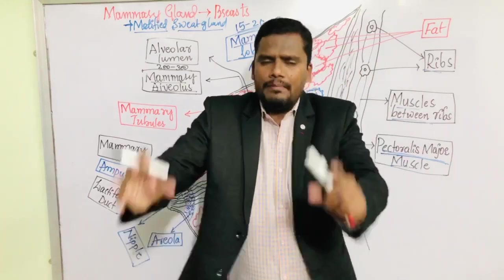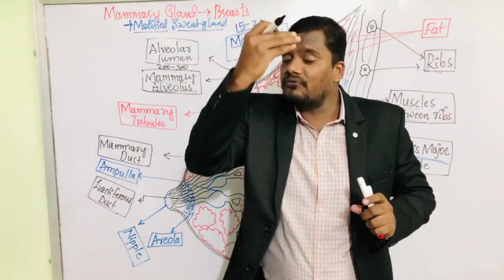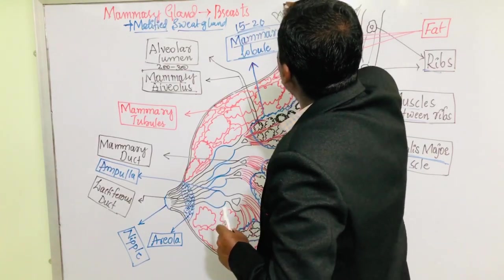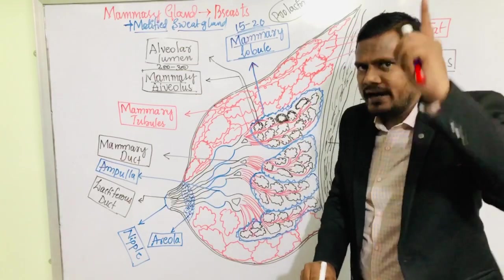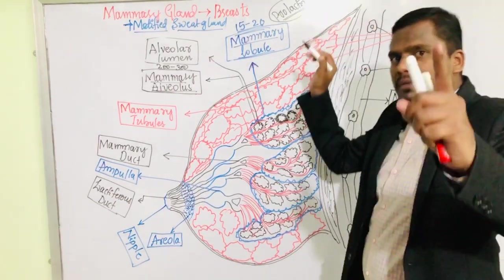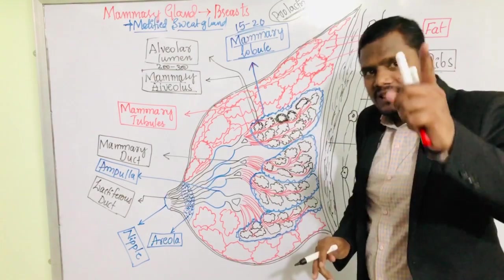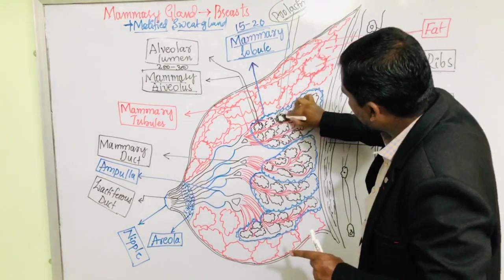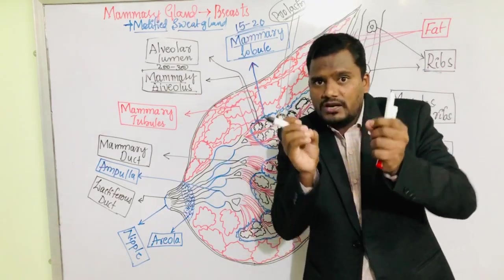The milk is secreted after the delivery of the baby. Once the mother delivers, the pituitary gland of the mother starts secreting a particular hormone called prolactin. Remember the name of this hormone — it is very important for competitive exams. After delivery, the mother's pituitary gland secretes prolactin, which comes and stimulates the alveoli to produce milk.